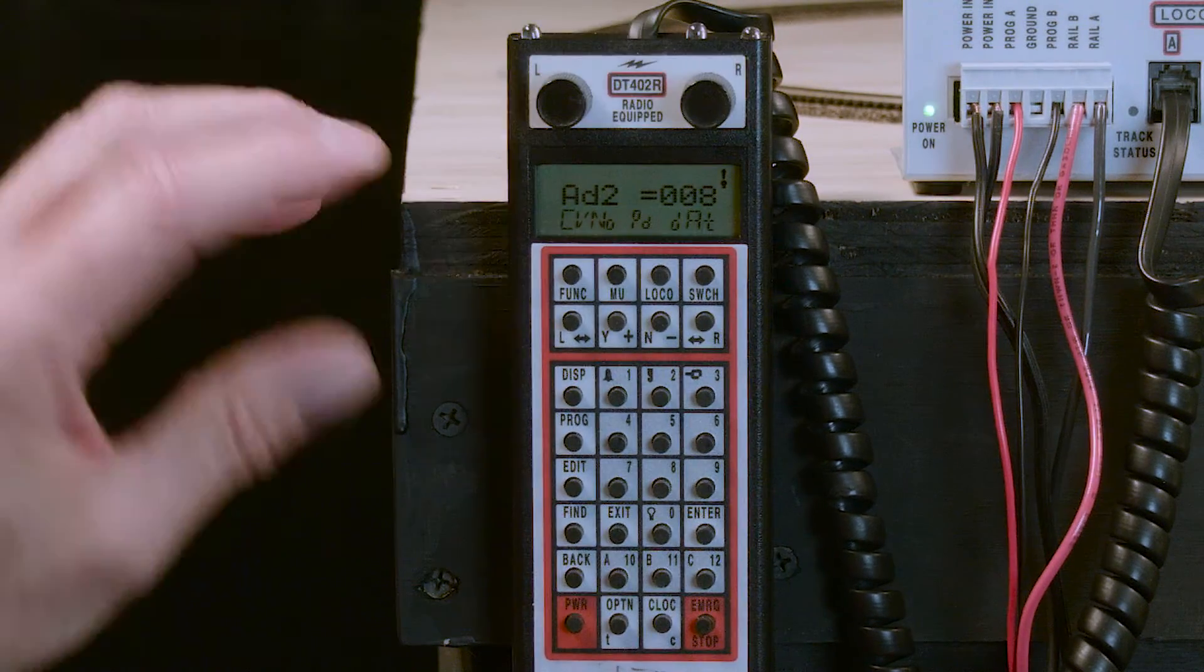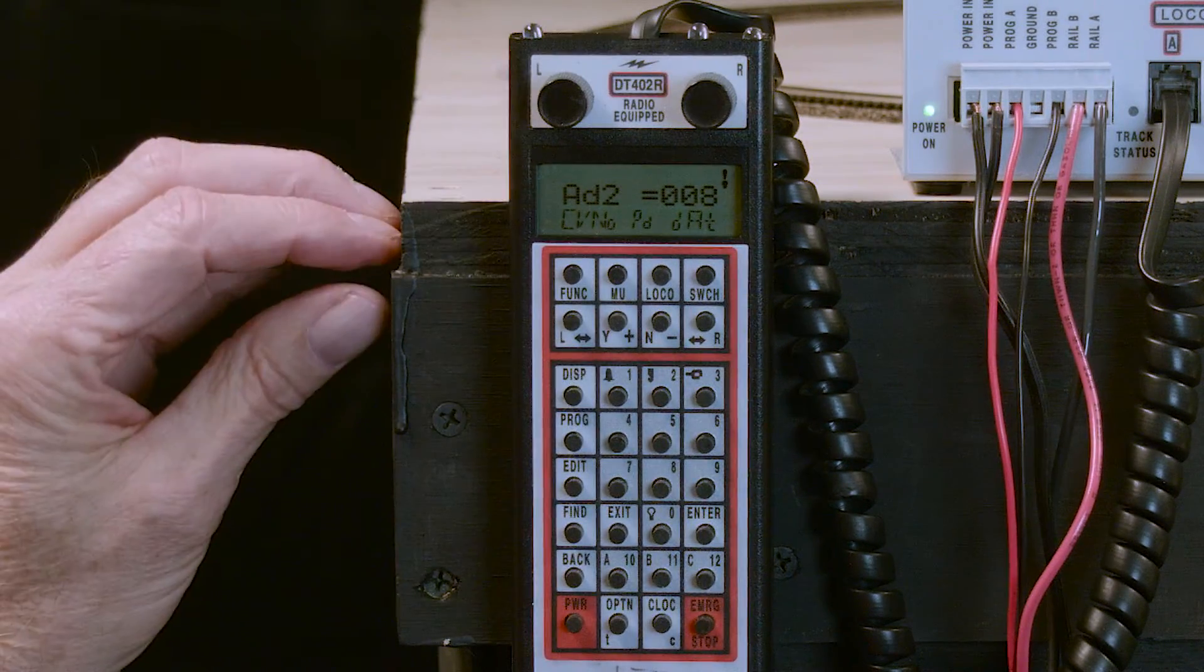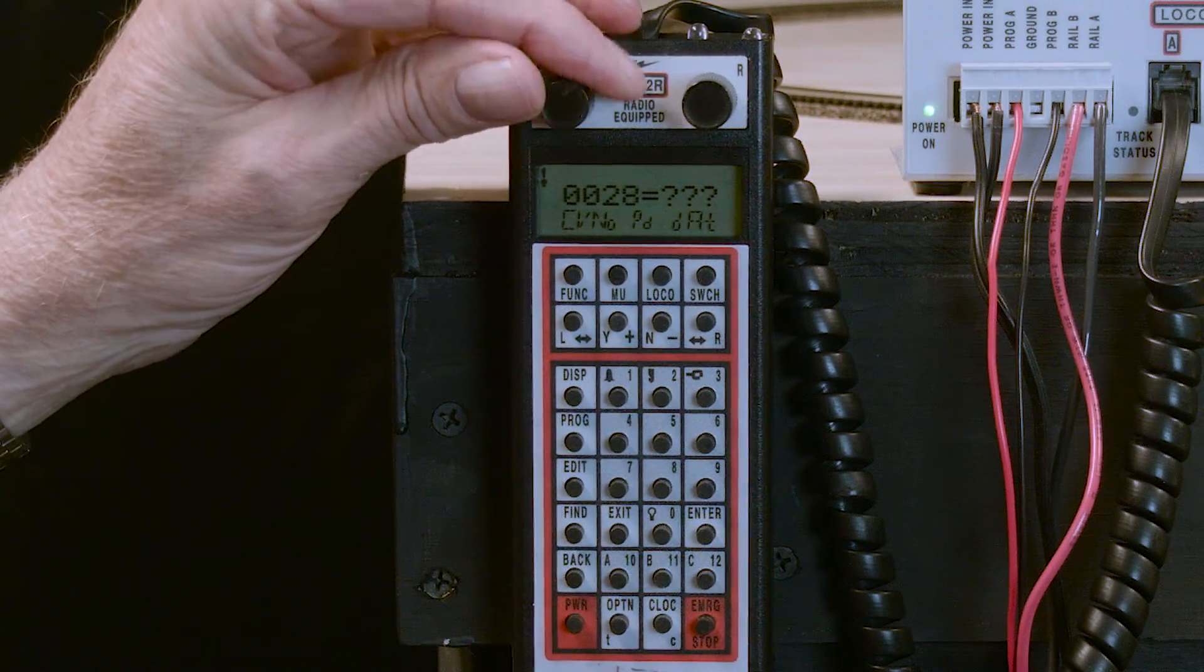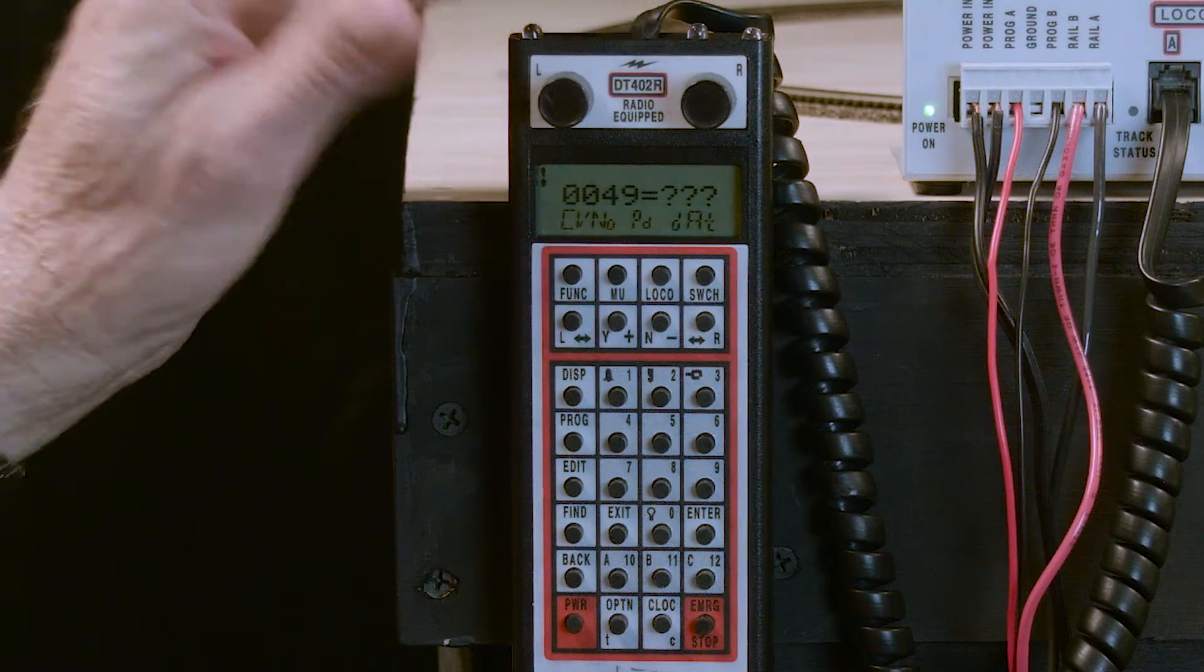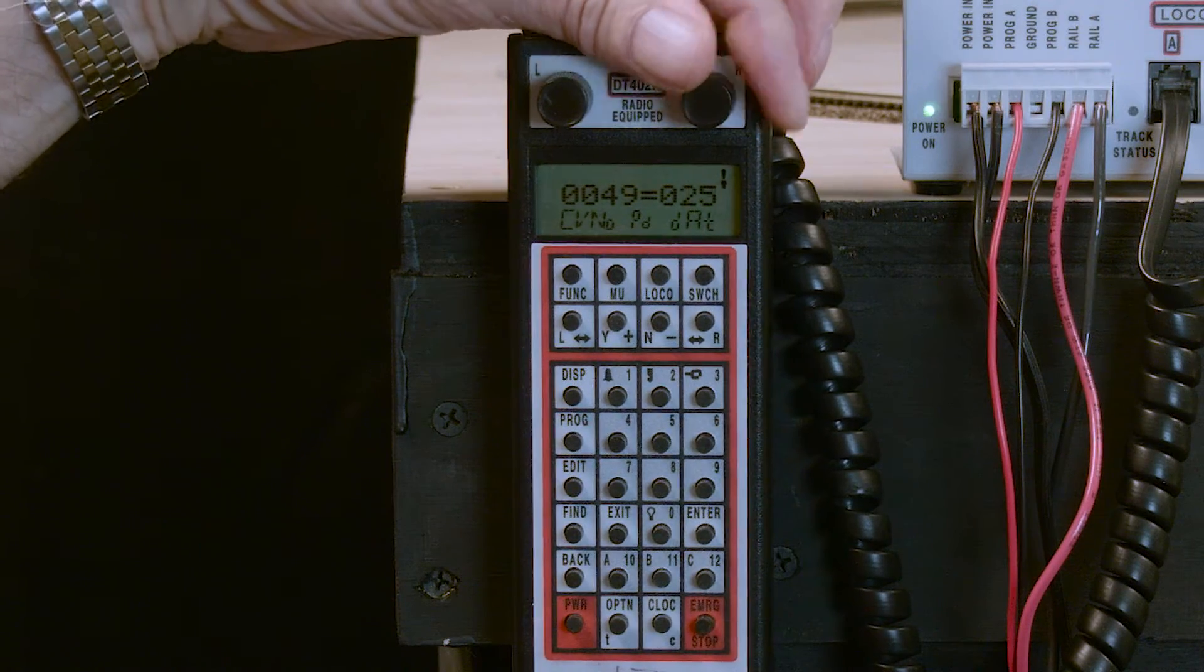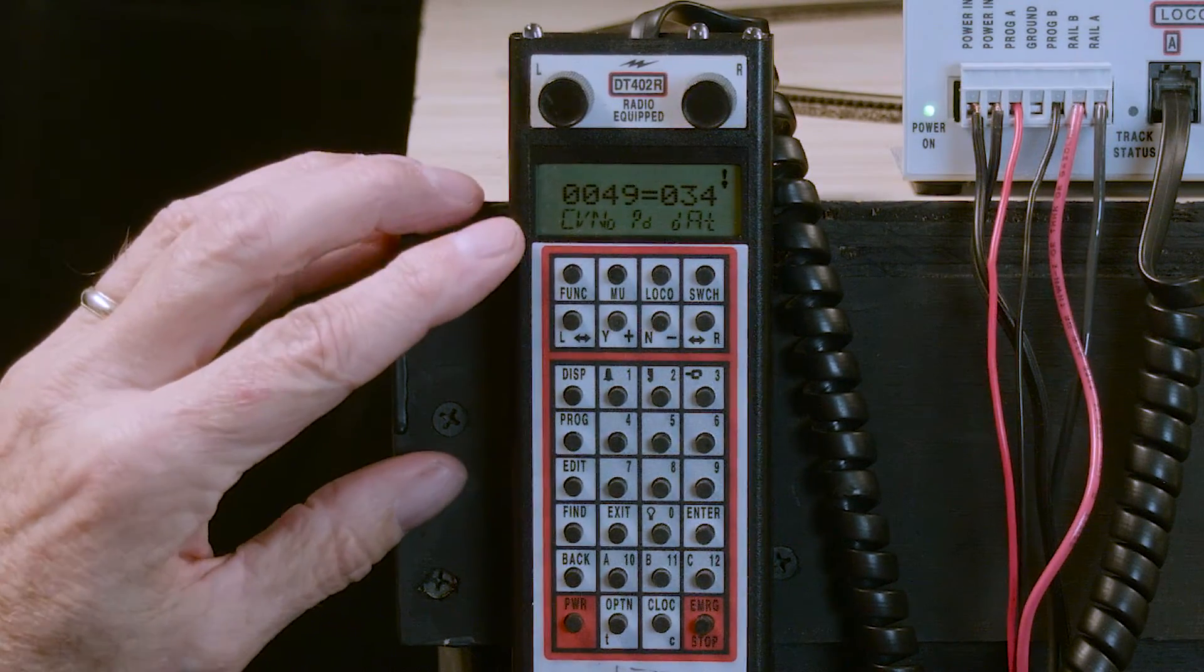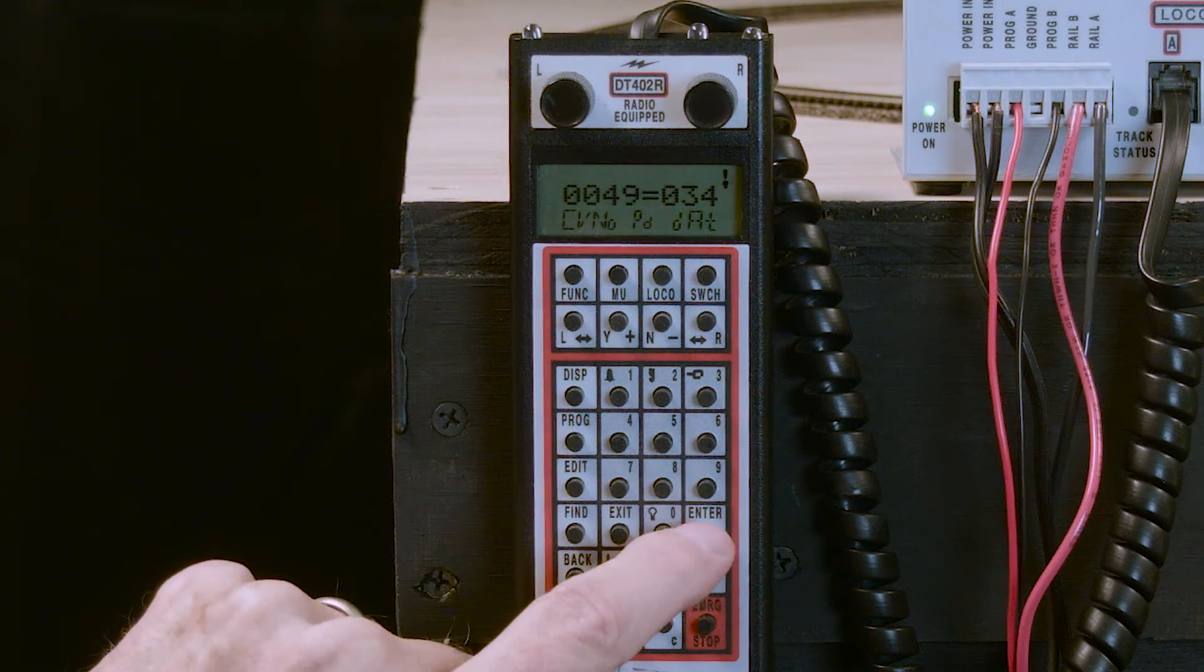So, we make sure we get to AD2 by pressing the right-hand throttle knob again. We turn our left throttle knob until we get to 49. 0, 0, 49. We then turn our right-hand throttle knob until we get to 34. Once we get 49 equals 34, we simply press the Enter key.